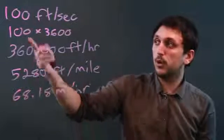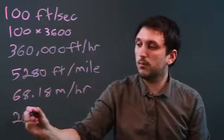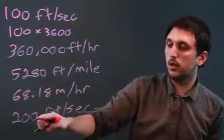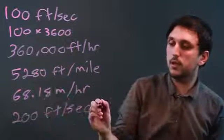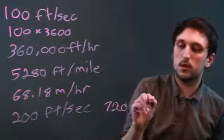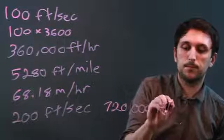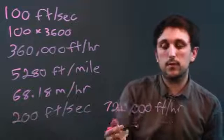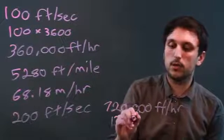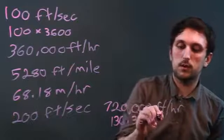If we wanted to use a different number like 200 feet per second, we would say, well, again, times 3,600 would give us 720,000 feet per hour. And then we divide by 5,280, which would give us 136.36 miles per hour.